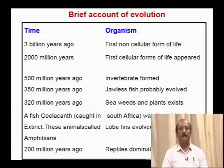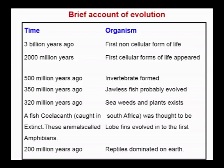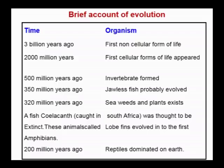Coming to a brief account of the evolution of different life forms: about 3 billion years ago, the first noncellular form of life evolved. Two thousand million years ago, first cellular forms of life appeared. Five hundred million years ago, invertebrates were formed. Three hundred and fifty million years ago, jawless fish probably evolved. Three hundred and twenty million years ago, seaweeds and plants existed.